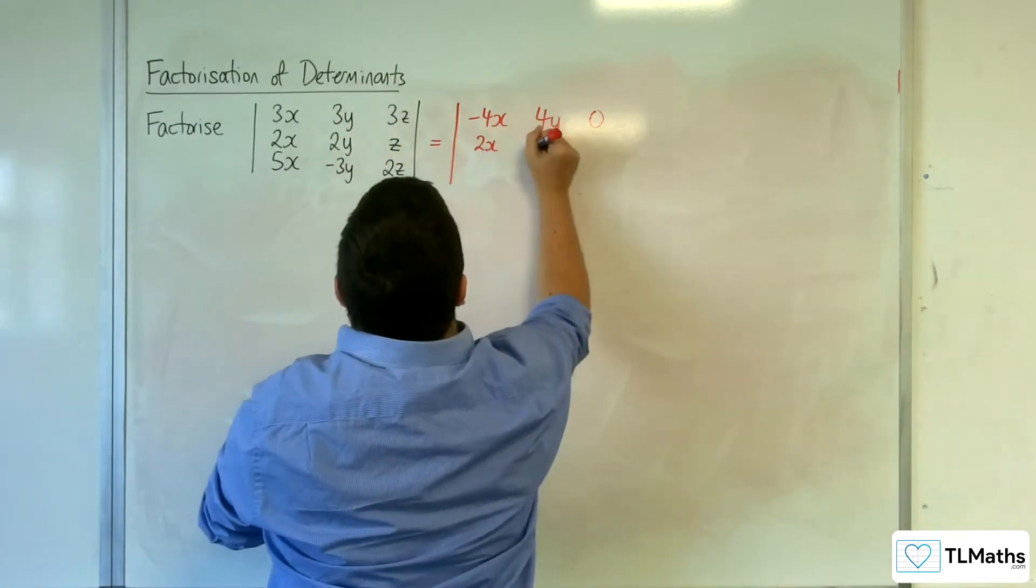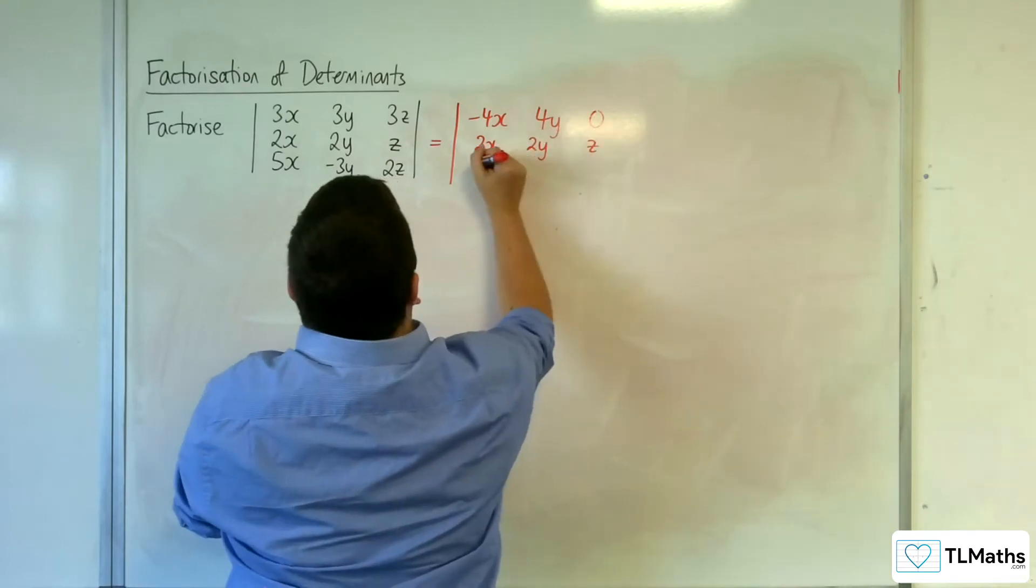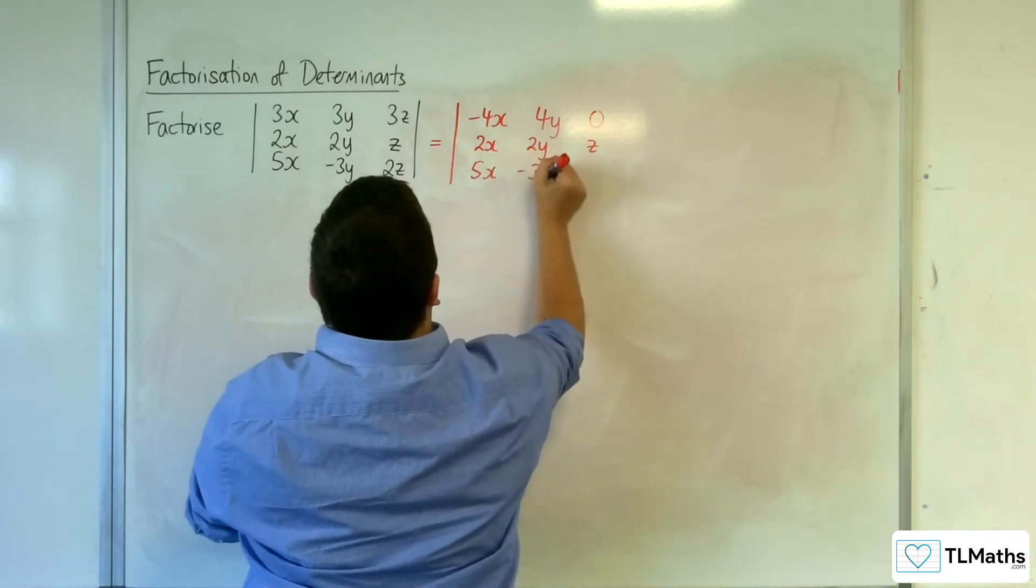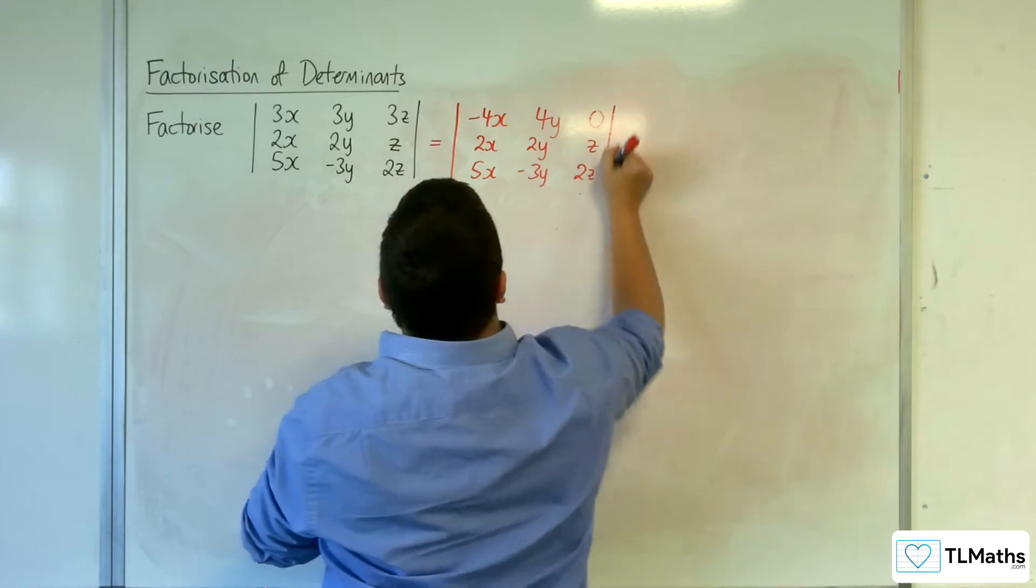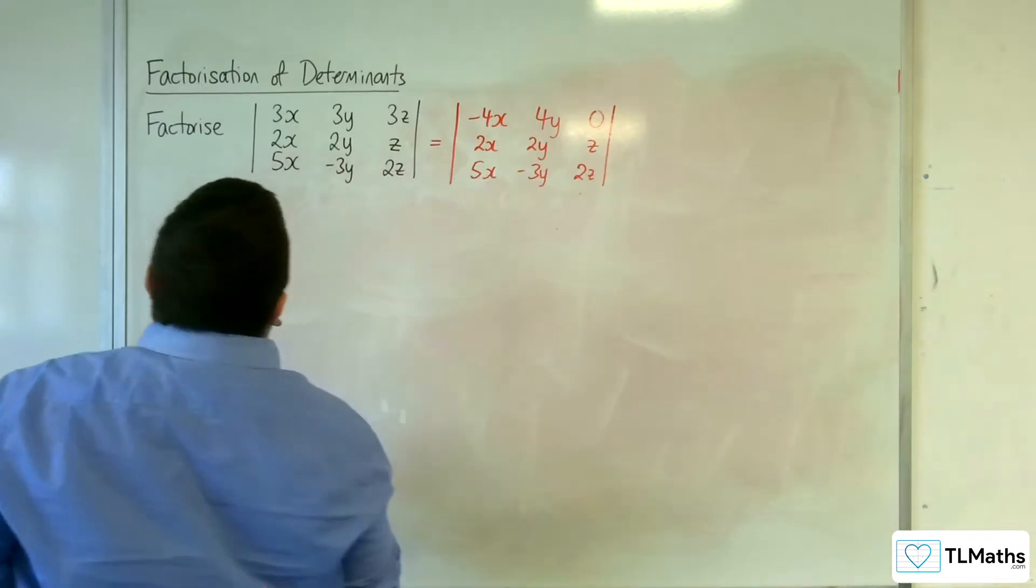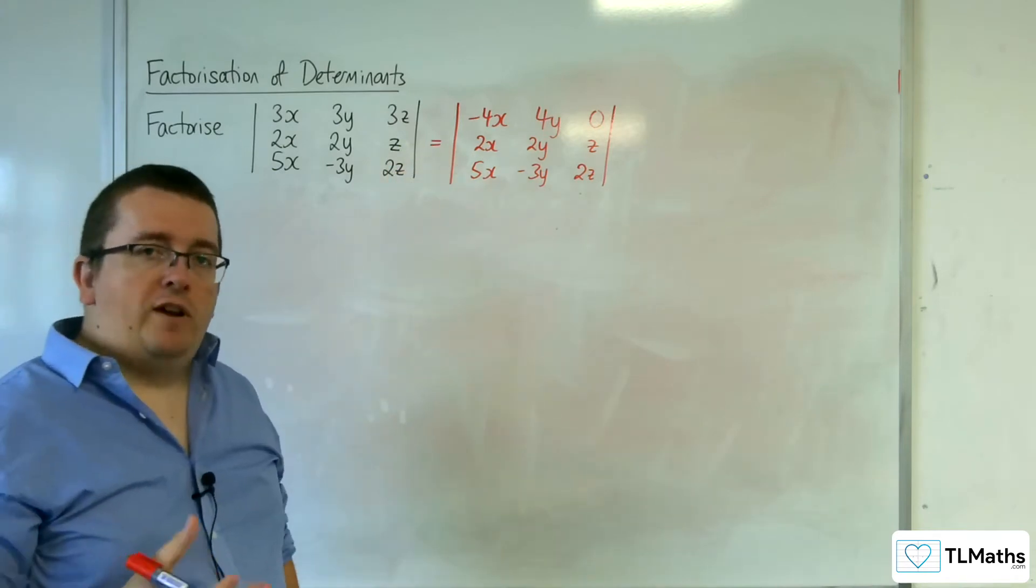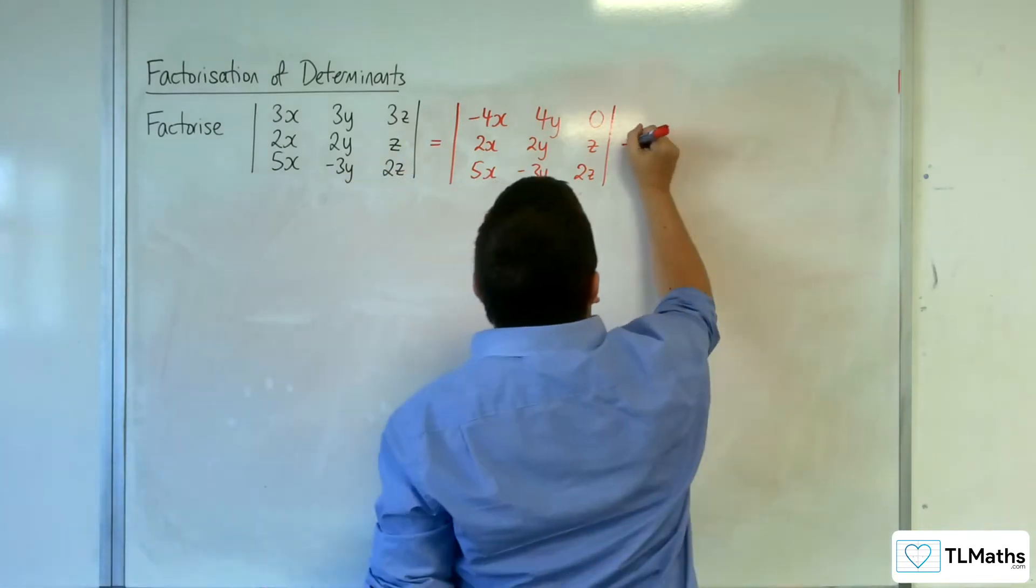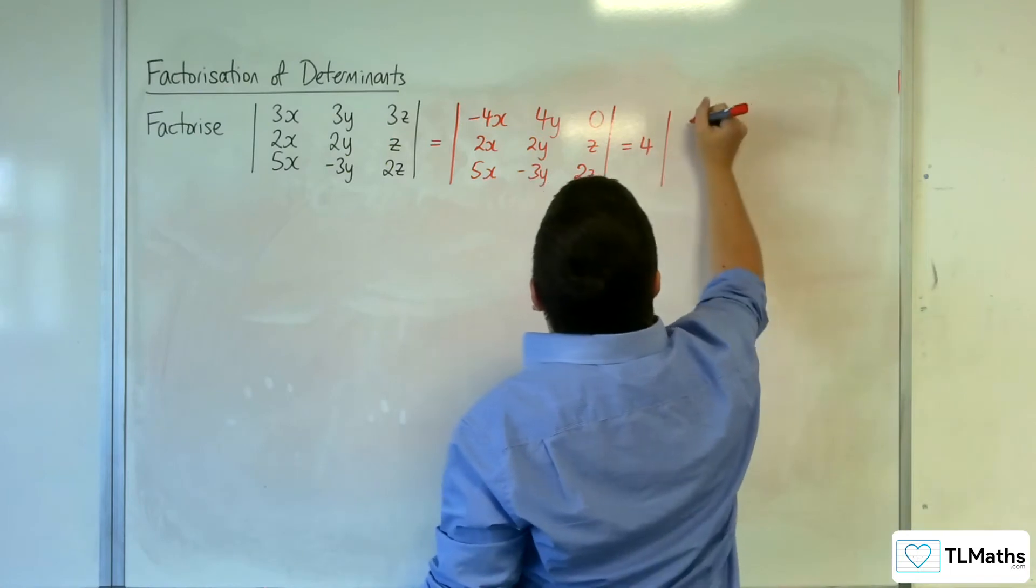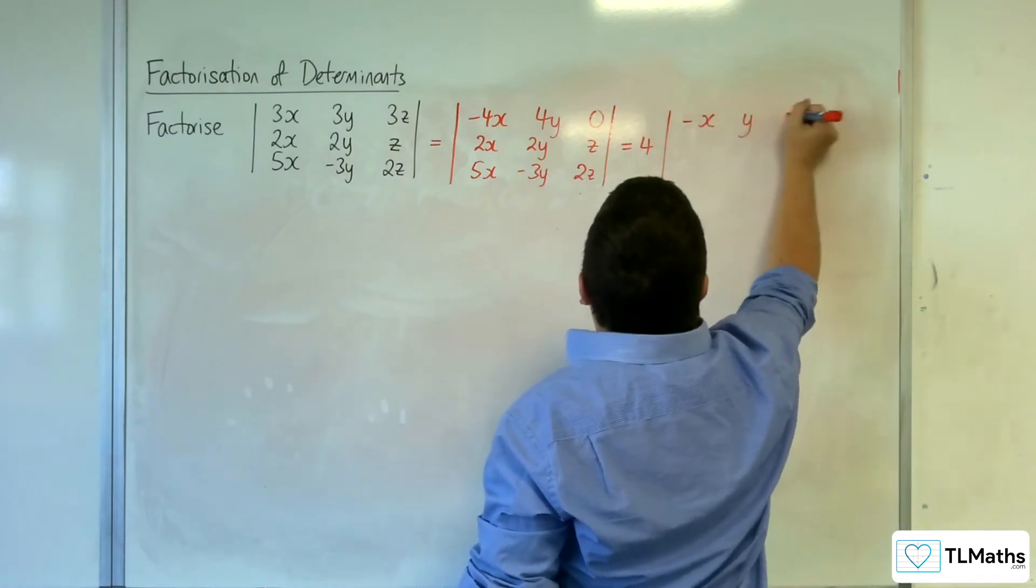And then I've got the 2x, 2y, z, 5x minus 3y, 2z. Now at this stage you might go, well, I've got a factor of 4 in the numerator, so I can factor that out. That's perfectly fine. So factoring out the 4, minus x, y, 0.